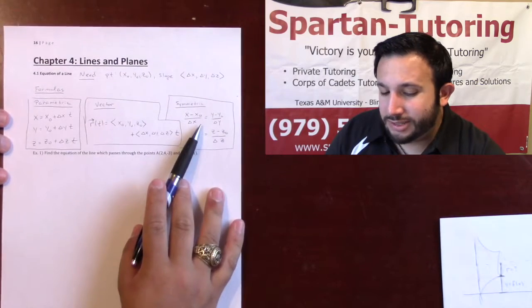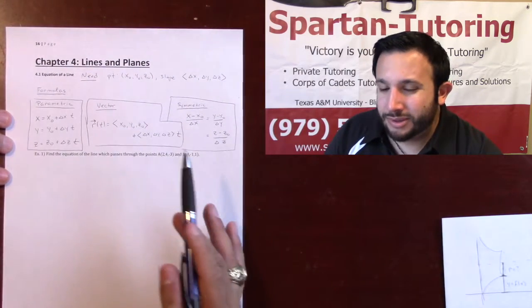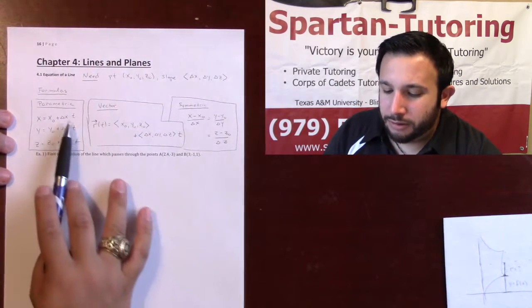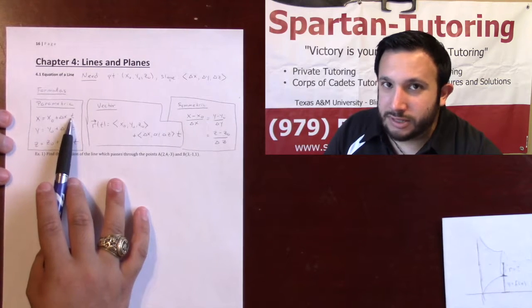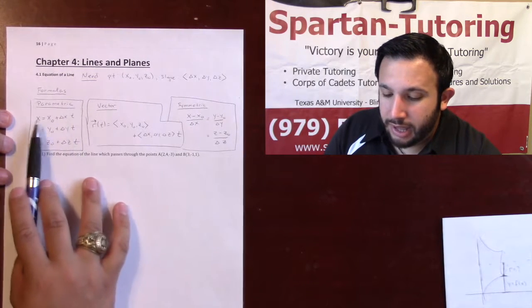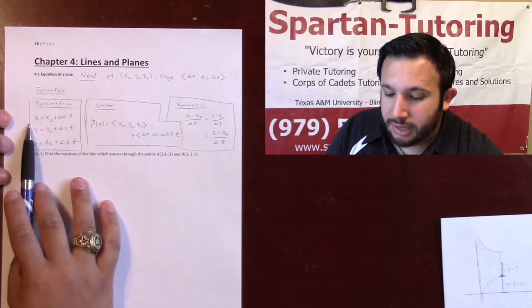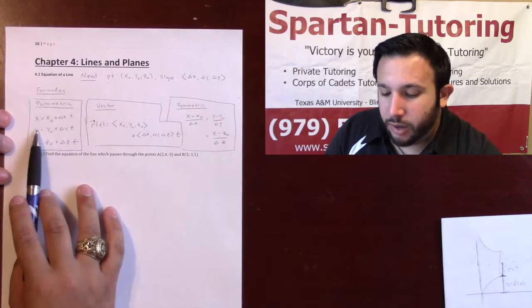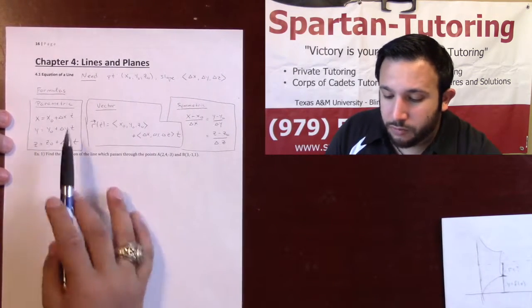Now this one, I honestly have the most trouble remembering, but the way that I remember it now, take a look at this, you just solve them for t. If I solve for t, I'd have x minus x-naught divided by delta x. And if I solve for that t, you'd have y minus y-naught over delta y, and so forth.